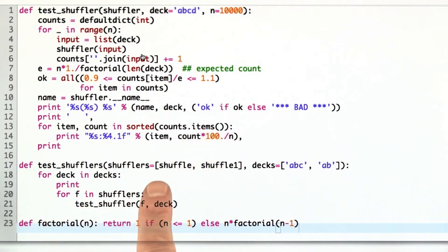Then I made another function, test shufflers, which takes a list of shufflers and a list of possible decks and it applies the test to the cross product of them. For every shuffler, we test every deck and we print the result.